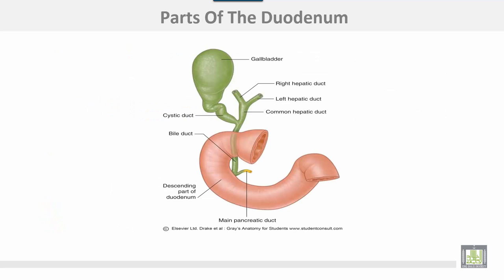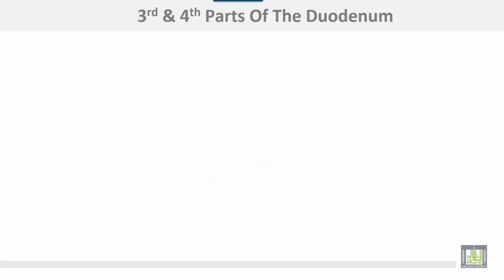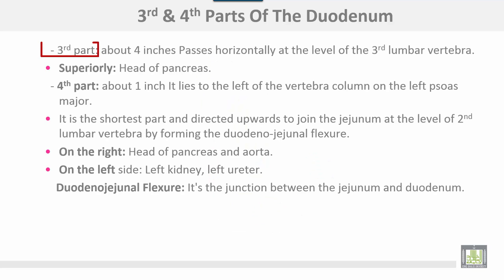Here are the first, second, third, and fourth parts of the duodenum shown. In the middle of the second part there is the opening of the bile duct.